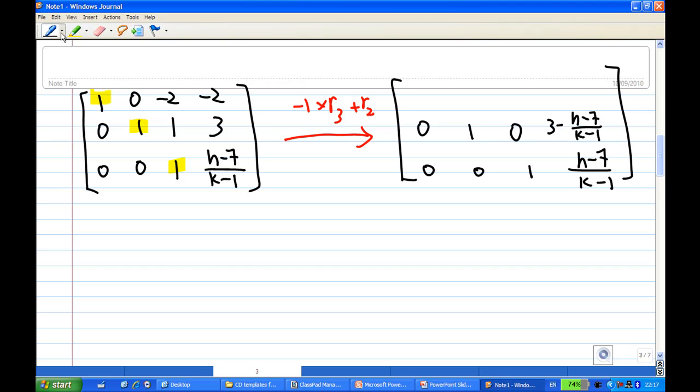And I'm going to take the third row times 2, add to the first row. And this will give me (1, 0, 0) in the first row. And the last column will be 2 times (h-7)/(k-1) minus 2.